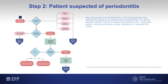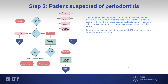We need to ascertain whether this clinical attachment loss is caused by local factors only, such as endo-perio lesions, vertical root fractures, caries extending to the cervical area, restorations, or impacted third molars. If this is not the case, we need to ascertain that this clinical attachment loss is present in more than one non-adjacent teeth.